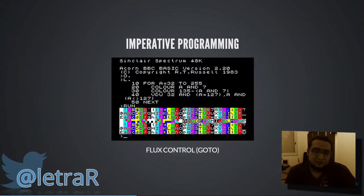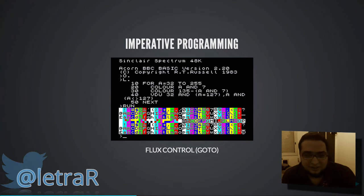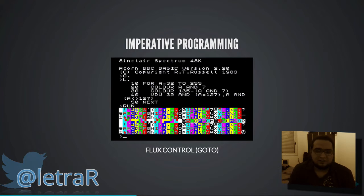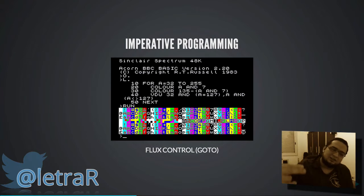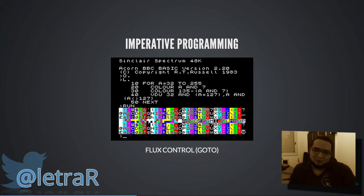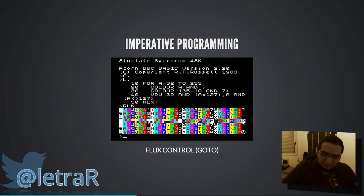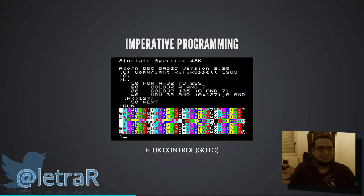Passou mais um tempo e surgiu a programação imperativa. A programação imperativa é o negócio do algoritmo, da receita de bolo: você tem várias instruções que são executadas em sequência. Ele começava do começo, ia descendo e executando. O controle de fluxo era através do GoTo: quando isso acontecer, vá para a linha 70. Seu programa ia executando, chegava naquele ponto, pulava para a linha 70, continuava descendo, depois voltava para a linha 7. Era muito esquisito e complicado.